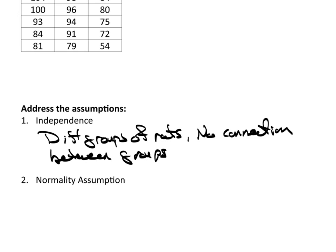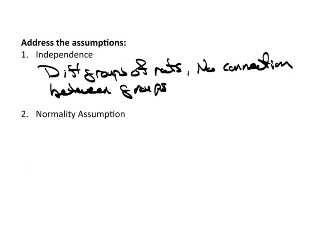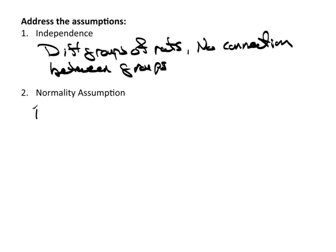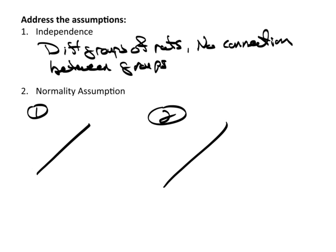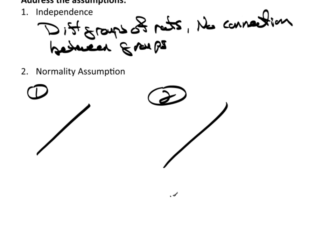What about normality? For the normality check, I'm going to take a look at group 1 and do a normal plot, group 2 and do a normal plot, and group 3 and do a normal plot. So let's jump to TC Stats and take a look at some normal plots.